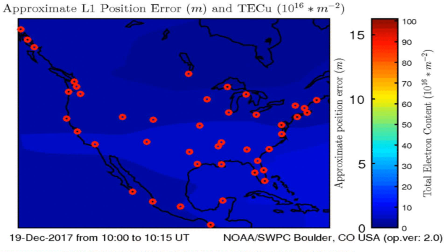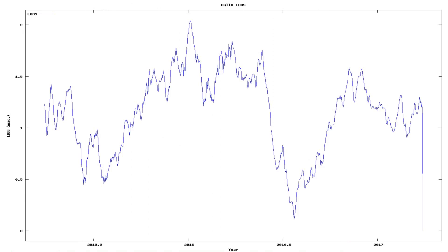And here we see the total electron content above the Earth. Anomalies in total electron content have sometimes preceded earthquakes below that area on Earth.